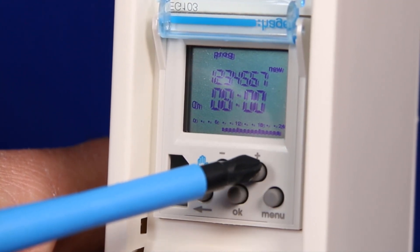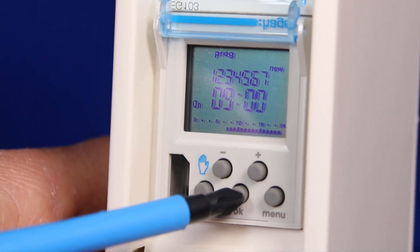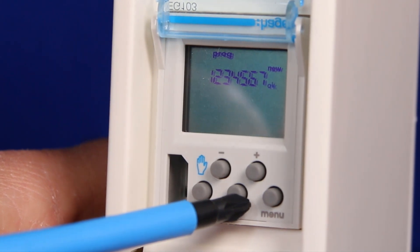We say ok and the minutes start flashing. If we want to choose minutes we can press the plus minus buttons or if we don't need to choose the minutes we can just say ok.